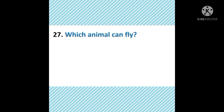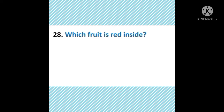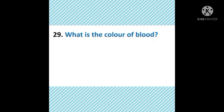Which animal can fly? ऐसा कौन सा animal है जो उड़ सकता है? The answer is bat — चमगादड़। Bat मतलब चमगादड़ होता है — यह उड़ सकता है। Which fruit is red inside? कौन सा fruit अंदर से red होता है? The answer is watermelon. Watermelon अंदर से red होता है, बाहर से green होता है।